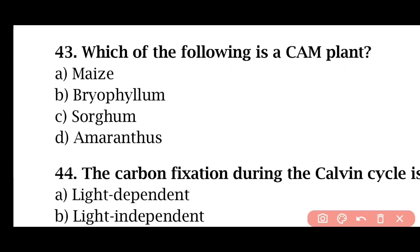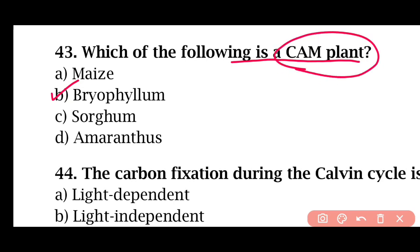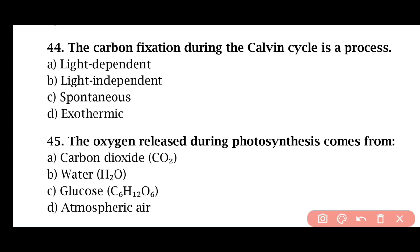Question 43: Which of the following is a CAM plant? — Moss, Bryophyllum, Sorghum, or Amaranthus. The correct answer is option B: Bryophyllum. Question 44: The carbon fixation during the Calvin cycle is a process that is — light-dependent, light-independent, spontaneous, or exothermic. The correct answer is option B. Carbon fixation is a light-independent process.